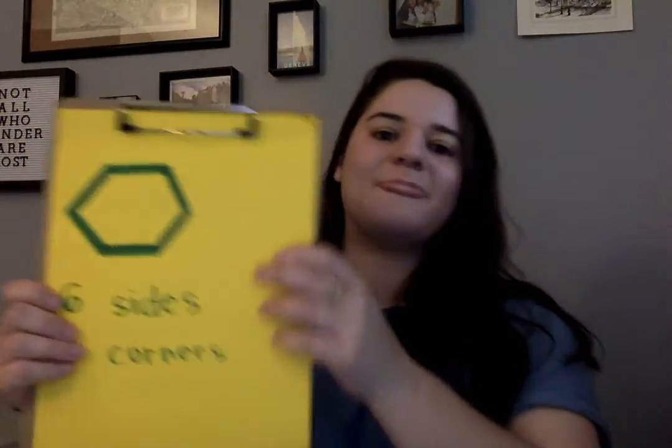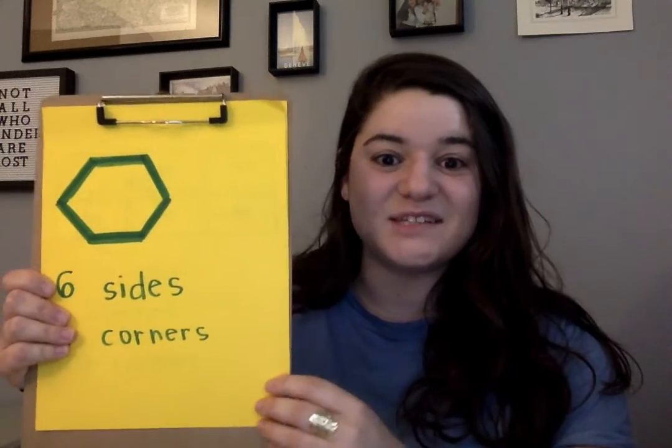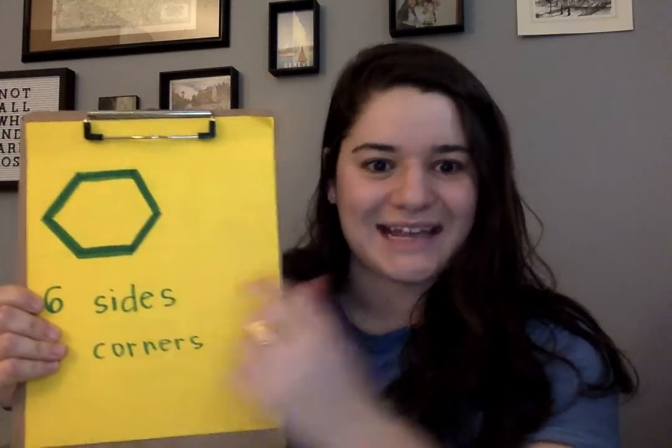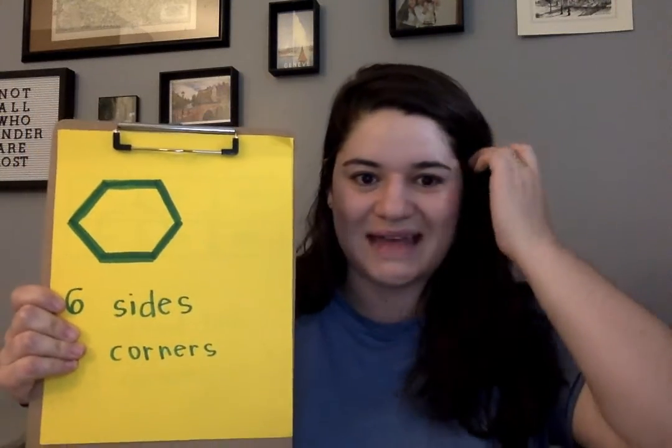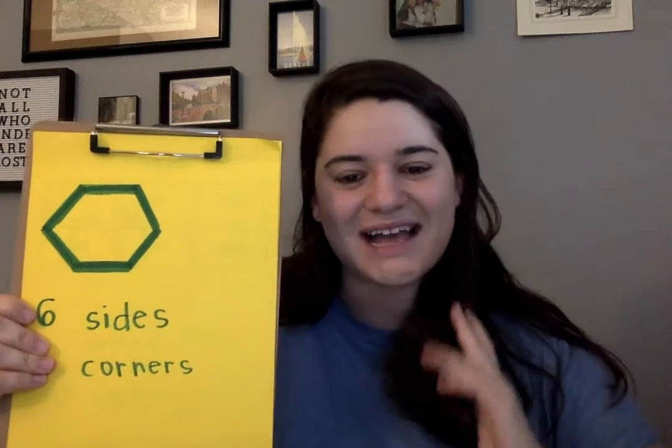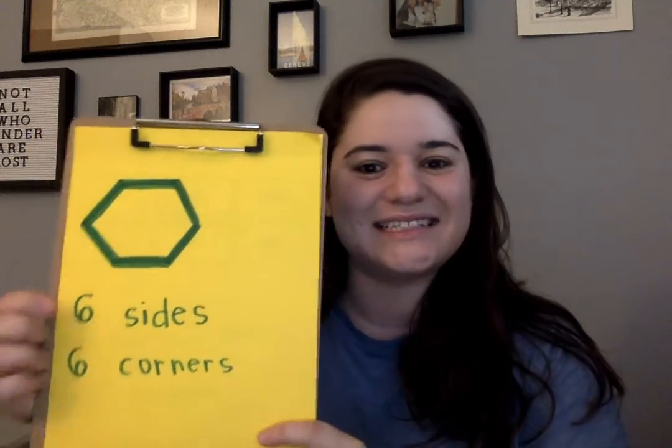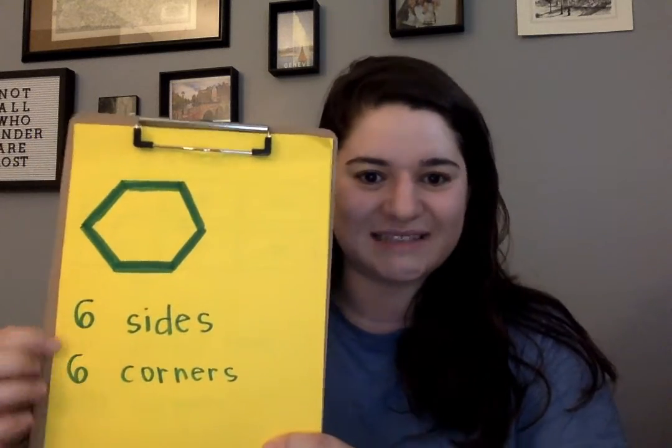Hi kindergarteners! For math today we are learning two new shapes. Let's look at our first shape. This is called a hexagon. A hexagon has six sides.